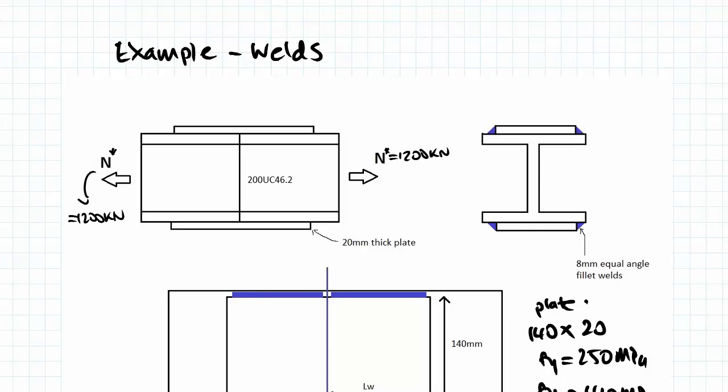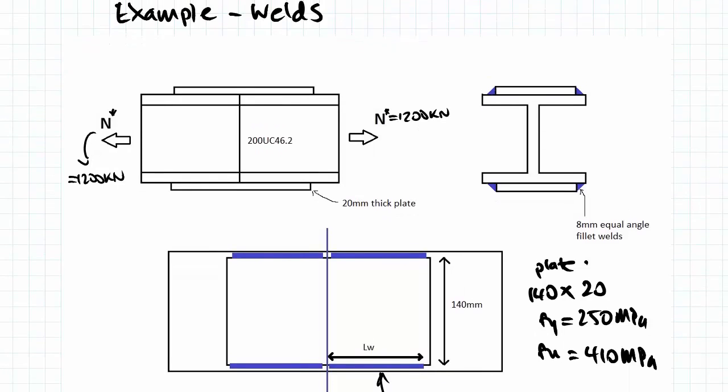So in this example, we're given two I-beams that are connected by plates on the top and bottom. You might have seen this example before when we did fracture patterns for bolt connections, but in this case, we're going to use weld connections instead of bolt connections.